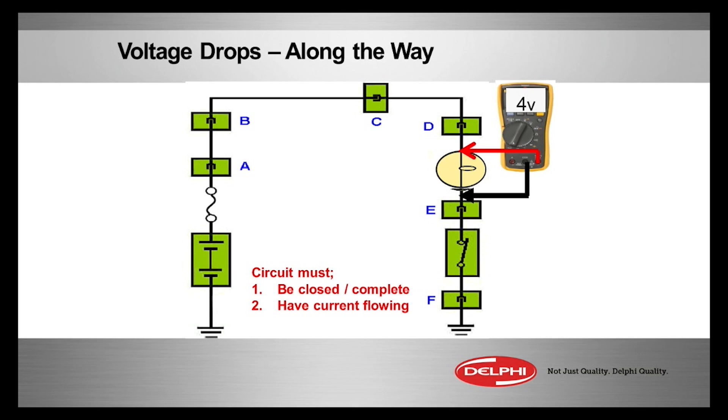So you keep moving the meter down between points E and F. So we can actually check the switch now. The switch input, no problem. Across the switch itself, no problem. Zero volts.